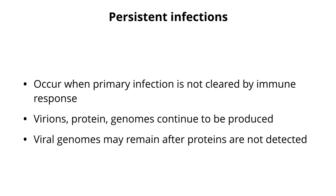A couple of points about persistent infections. The acute part of the infection would be ended if the immune system could clear the infection, but in most cases the immune system cannot clear the infection, so the virus stays. Sometimes virus particles, proteins, and genomes are made during this persistent infection — it really depends on the virus. If you have continuous infectious virus production, then you have to make virus particles and genomes and proteins. But in some cases you only have genomes present and there are no viral proteins detected. There's a whole spectrum of possibilities with persistent infections.